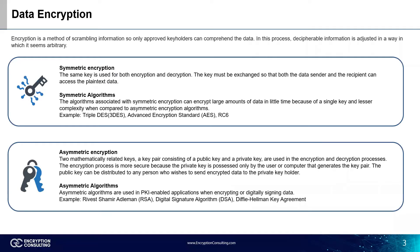Let's begin with the basics of what encryption is. Encryption is a method of scrambling information so only approved key holders can comprehend the data. In other words, encryption is the process of converting plaintext into ciphertext to secure the communication between two parties.